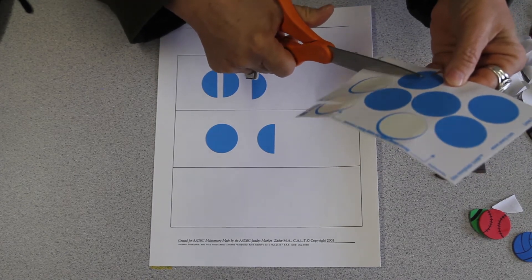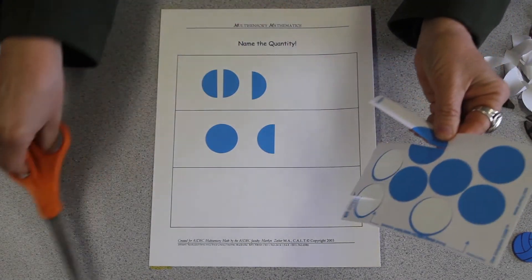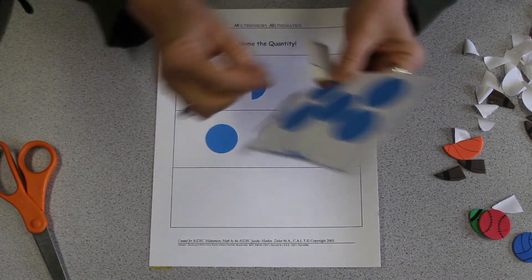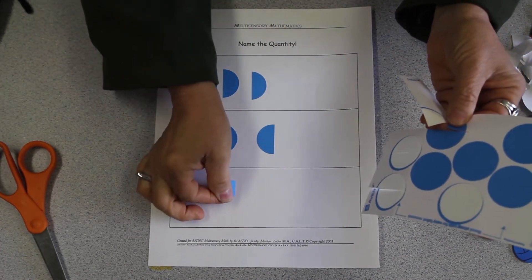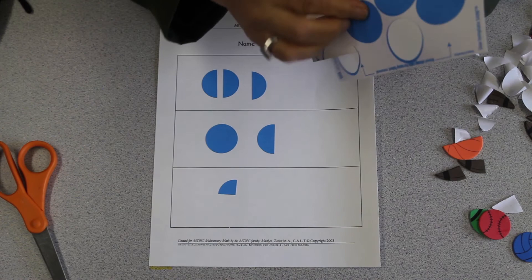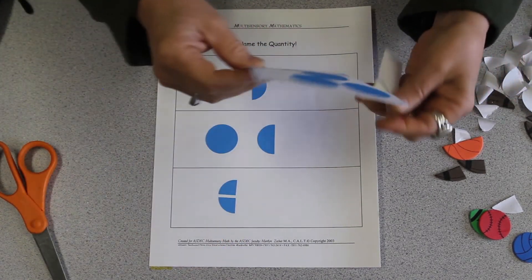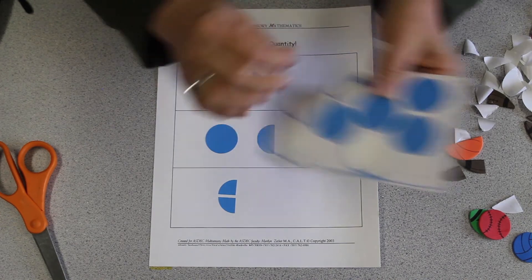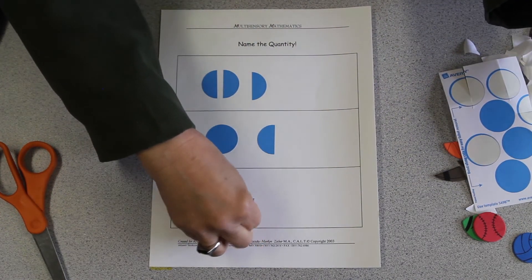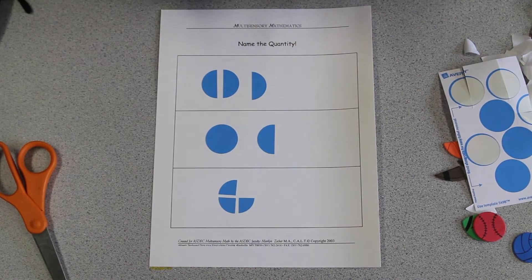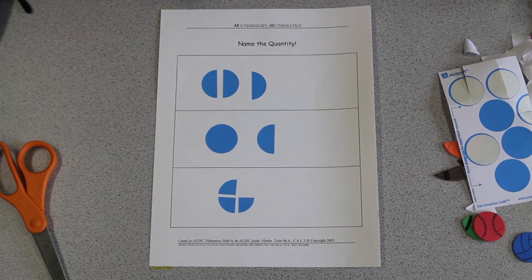So having students illustrate their own fraction concept cards helps them to understand the vocabulary and be able to use it more efficiently when it's represented by numbers. This moves toward the representational level. At ASDEC in our program, we advocate a concrete to representational to abstract approach.